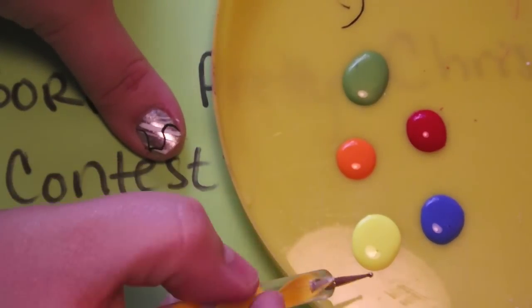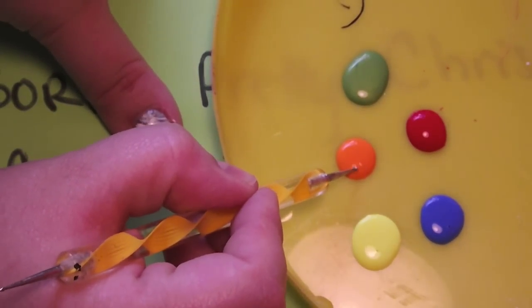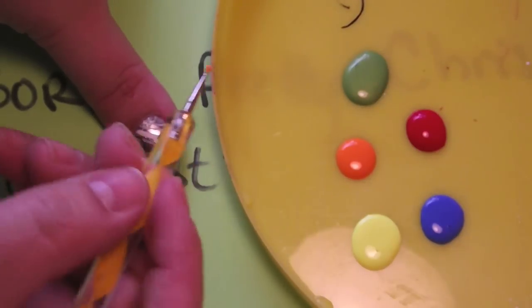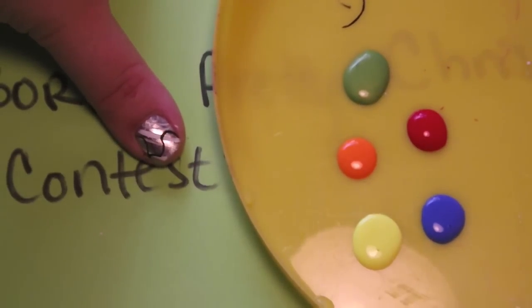So once your black has had a chance to dry, what you're going to do is you're just going to come in with each one of your colors and you're going to load up your dotting tool. I'm going to bring you guys in a little bit closer.